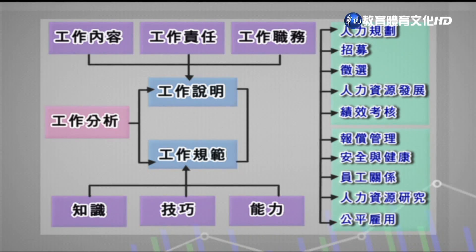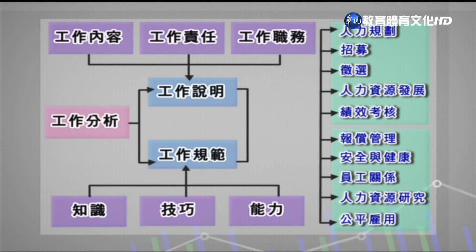接下來我們看工作分析的流程圖。工作分析的兩大產物就是工作說明和工作規範。工作規範是以人為基礎，說明這個職位的人應該要具備的知識、技巧及能力；工作說明則是說明工作的實際內容、職責、職稱及上下屬關係。藉由工作分析所產生的工作說明可應用於人力規劃、招募、徵選、人力資源發展、績效考核、薪酬管理、安全與健康、員工關係等。